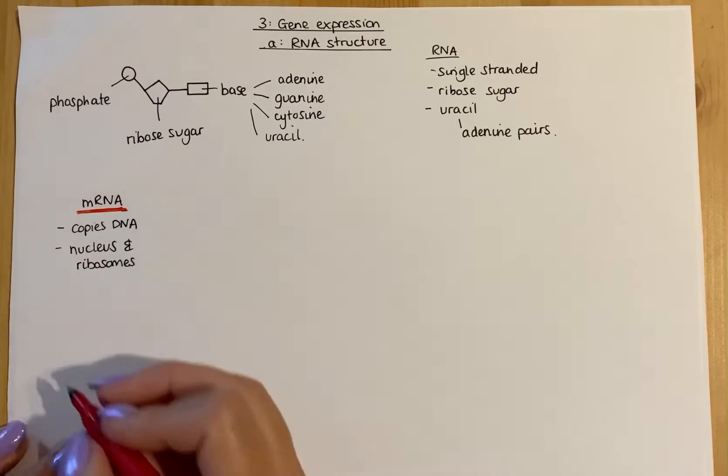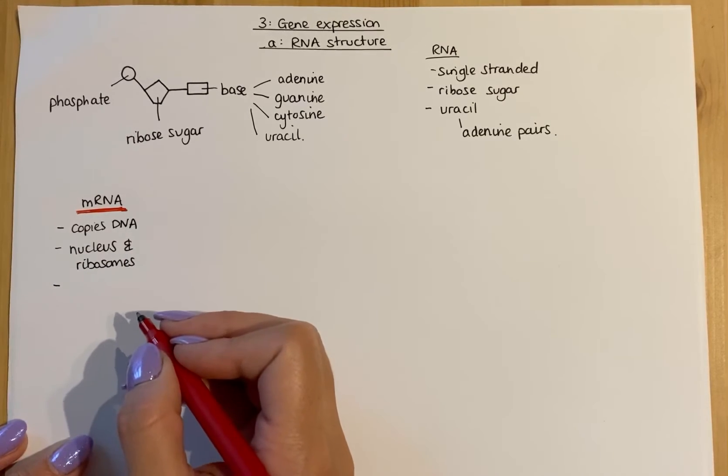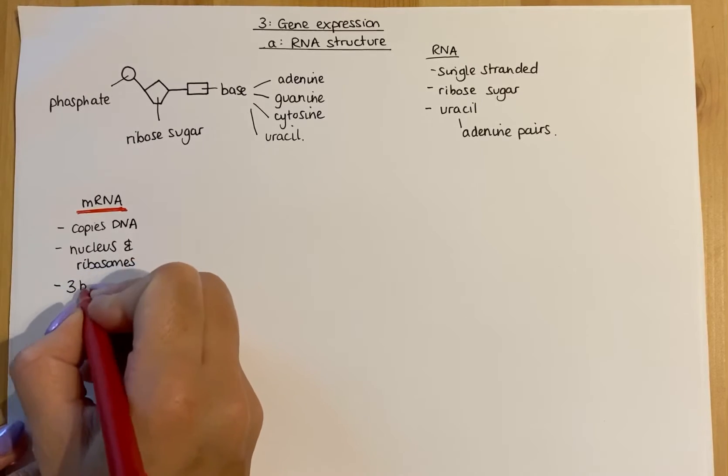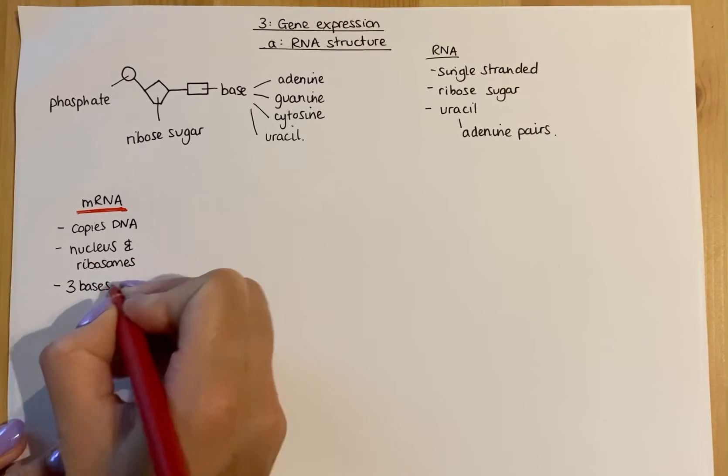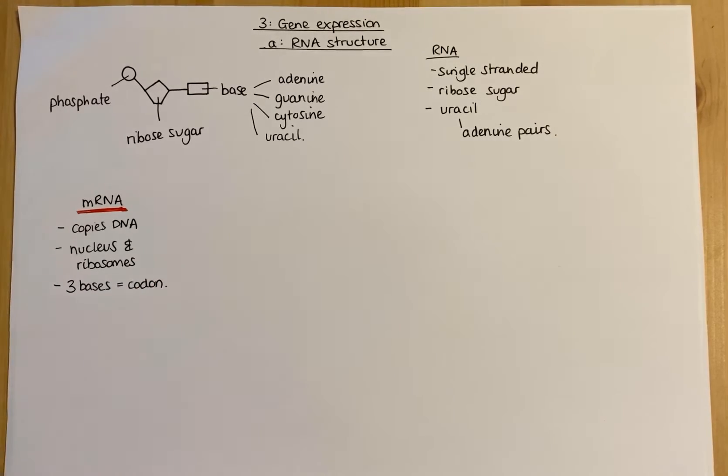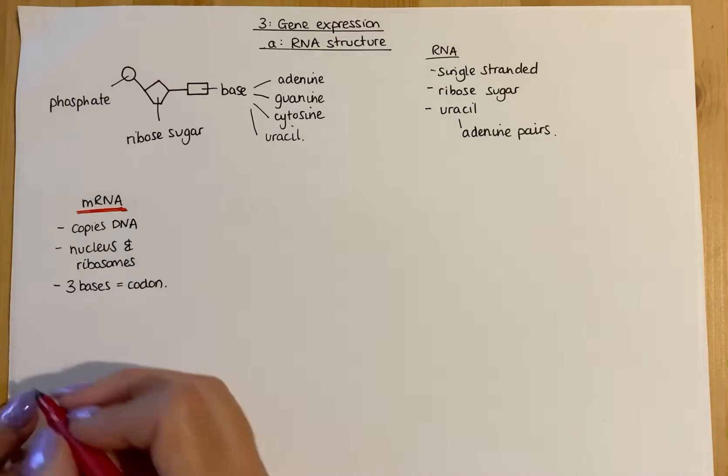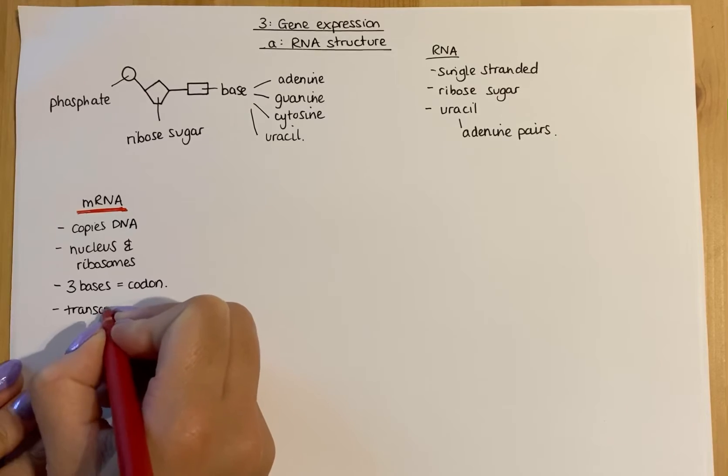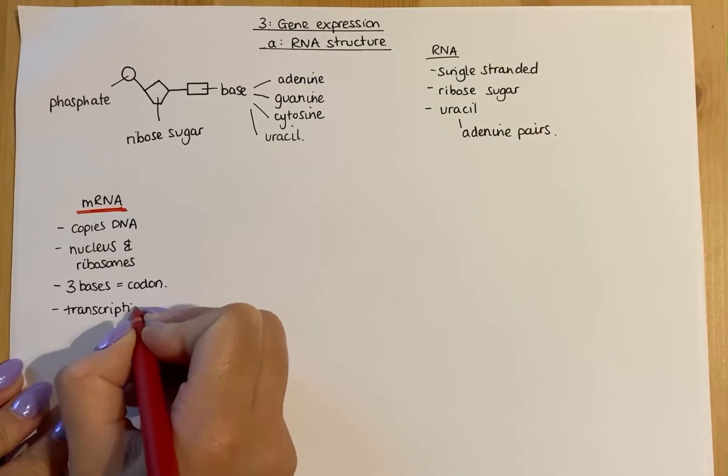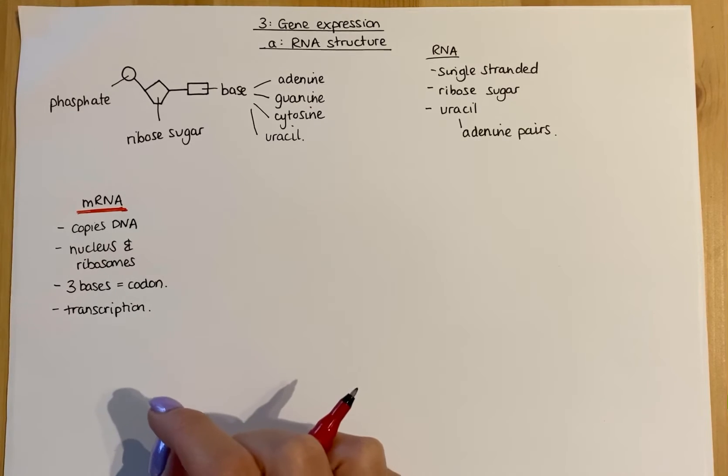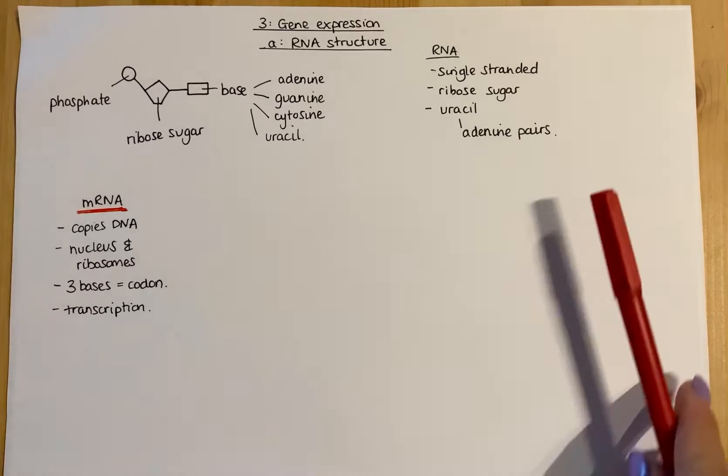Previously we talked about DNA having three bases called a triplet. For mRNA, three bases is called a codon. mRNA is involved in the process of transcription. mRNA carries out that process within the nucleus.